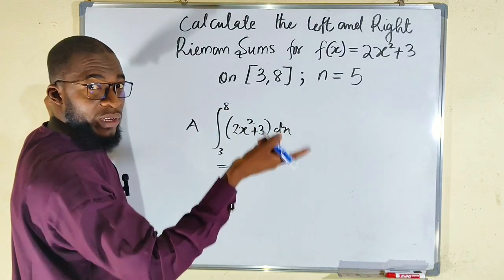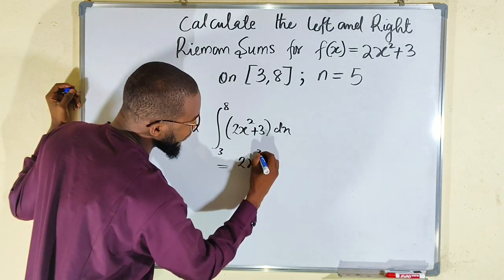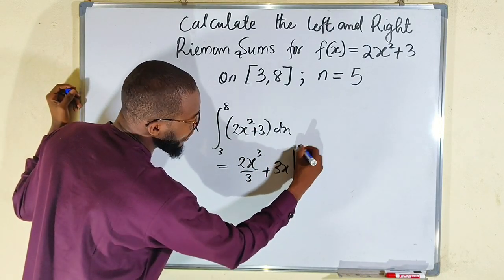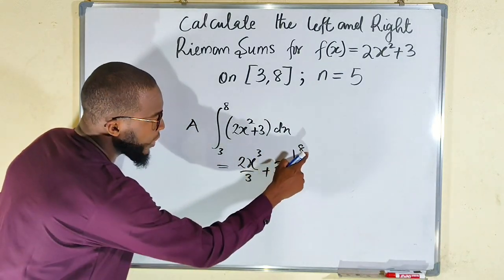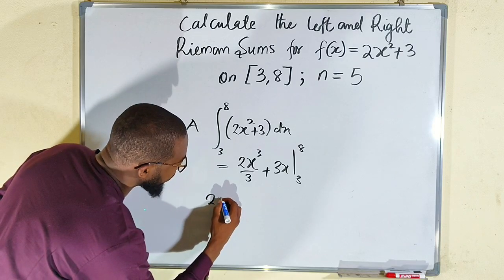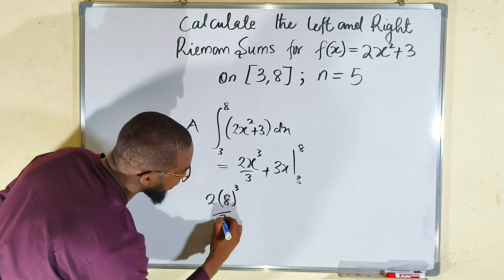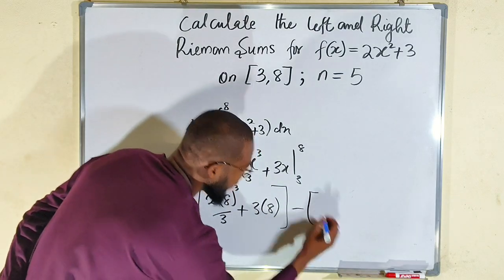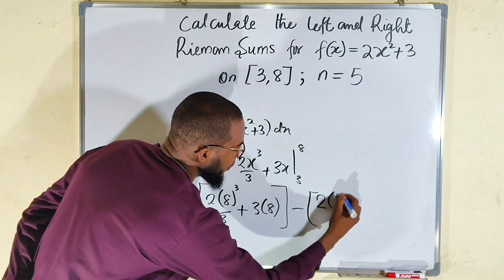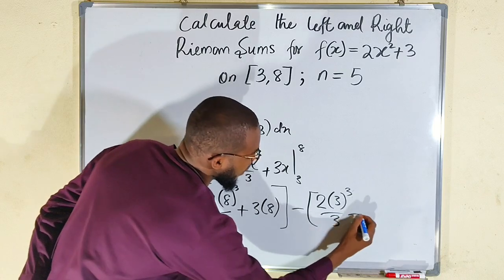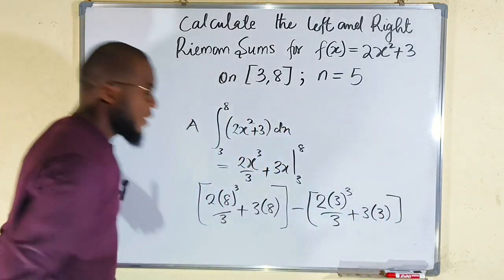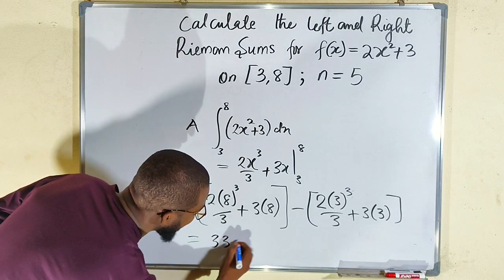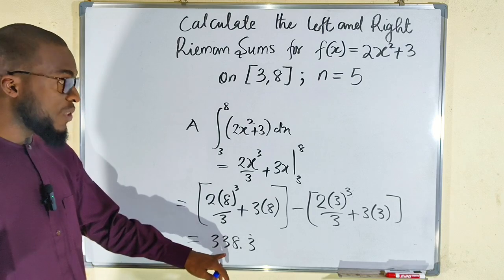The integral of x squared is x cubed divided by 3, so this becomes 2x cubed over 3, and the integral of 3 is 3x. Evaluating from 3 to 8: substitute the upper limit 8 to get 2 times 8 cubed divided by 3 plus 3 times 8, then subtract the lower limit 3 giving 2 times 3 cubed divided by 3 plus 3 times 3. Simplifying on the calculator gives 338.3 recurring.